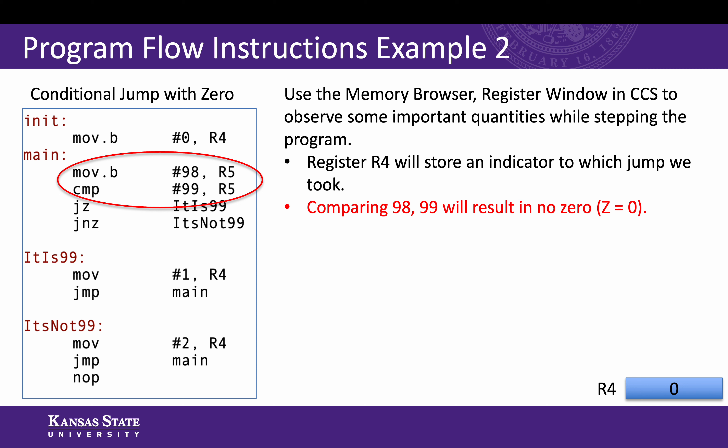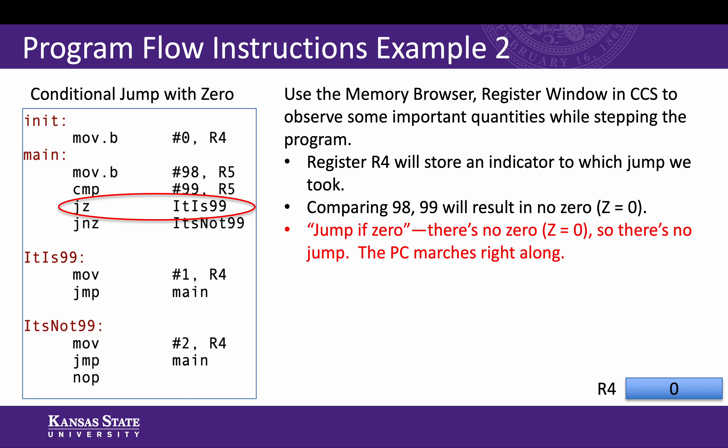The compare instruction is subtracting 99 and 98 and looking at the result when it decides whether those two things are equal or not. So behind the scenes, the status register — if it was not already cleared for the Z flag — is now storing Z equals zero after that compare instruction. So the program counter marches along and it gets to the jump-if-zero instruction, and there's no zero — Z equals zero — so there's no jump. The PC program counter marches right along.